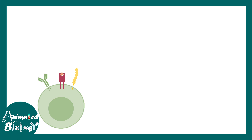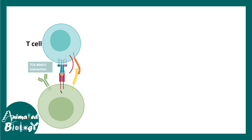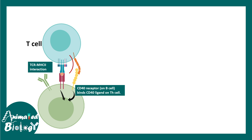This is a B cell. The B cell interacts with a T cell via the T cell receptor. The first interaction — the T cell and MHC 2 interaction — gives rise to signal 1 for activation, and CD40 and CD40 ligand interaction gives rise to the second signal for activation. In Hyper IgM syndrome, there are genetic defects which lead to a faulty CD40 ligand on the T cell.